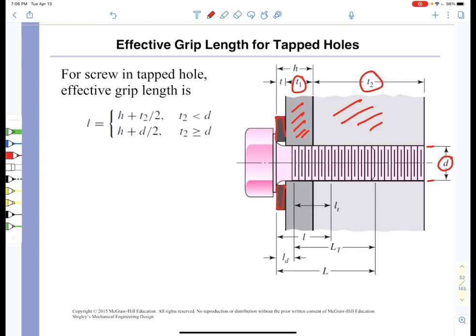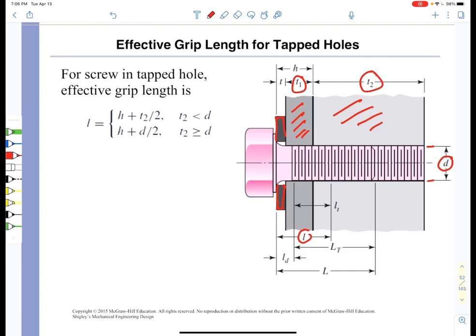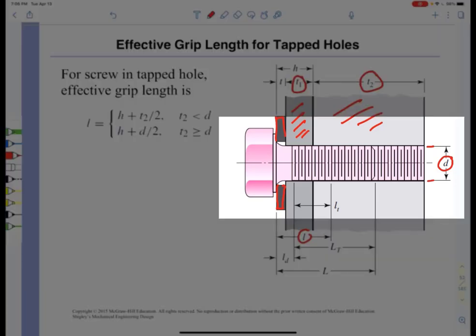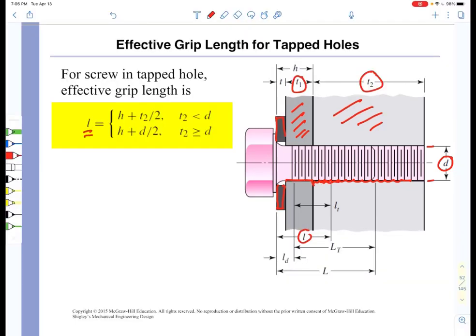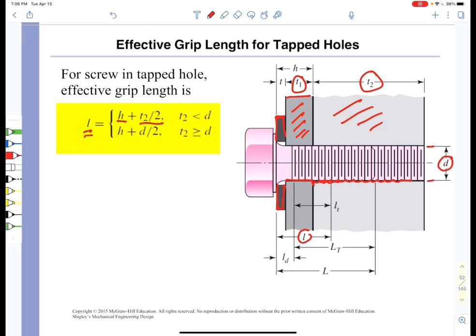The grip length is the length of all of the compressed components and the way we decide upon the grip length for a threaded plate is: the grip length is going to be equal to h, which is the thickness of the washer and the top plate, plus half of the thickness T2 if the thickness T2 is less than the bolt diameter. Otherwise the grip length is equal to h plus half the bolt diameter. The depth of the grip can only go at most to half of the bolt diameter.